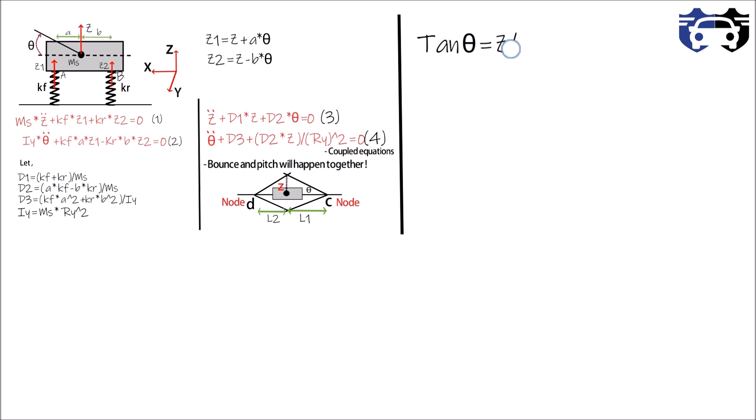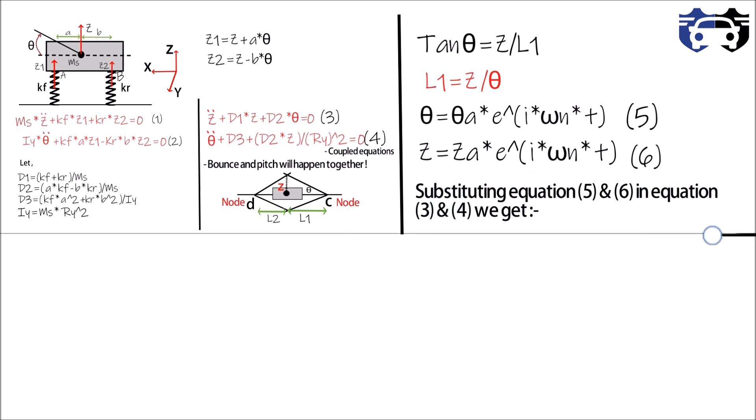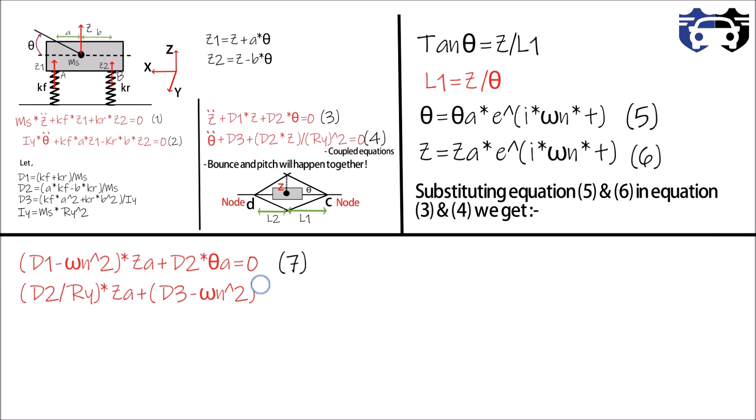From this figure you can write tan theta equals to z divided by L1, and L1 can be written as z by theta if theta is very small. For solving equation number three and four, we are going to use the mechanical vibration concepts. Now I'm going to substitute equation number five and equation number six in equation three and four. We get D1 minus omega n square multiplied by z a plus D2 multiplied by theta a equals to zero. This is our equation seven.